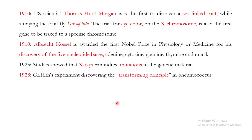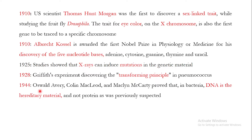In 1928, the famous Griffith experiment discovered the transforming principle in Pneumococcus bacteria. In 1944, Avery, MacLeod, and McCarty proved that the transforming principle explained by Griffith in 1928 was actually DNA, and that DNA is the hereditary material — not protein, as was previously suspected.